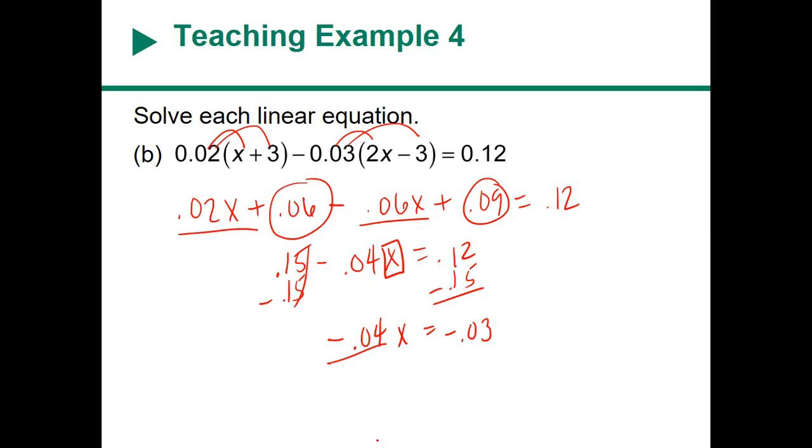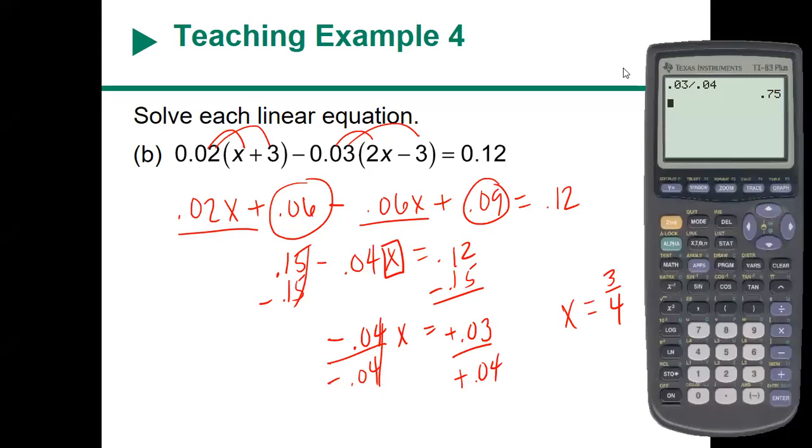And then I'm going to divide, and I get x equals what? One negative by negative is a positive, and this is just going to simplify to three-fourths. Having decimals, did it change anything? No, same process.